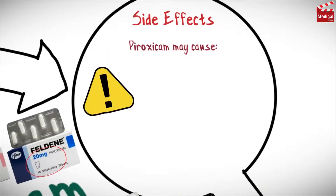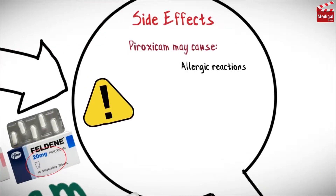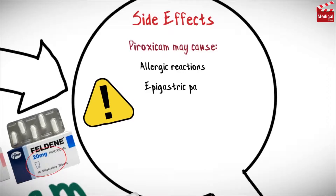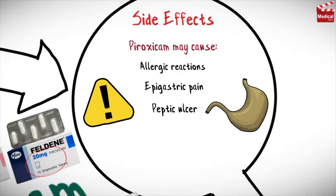Piroxicam may cause allergic reactions, epigastric pain, peptic ulcer, gastrointestinal bleeding, and renal impairment.